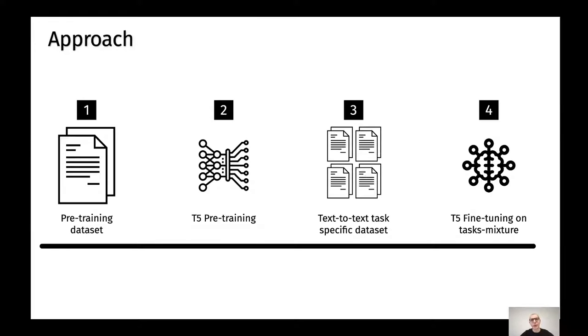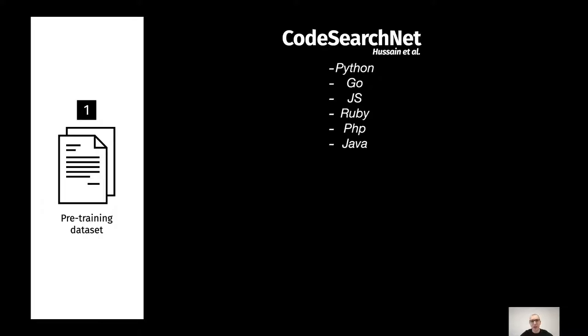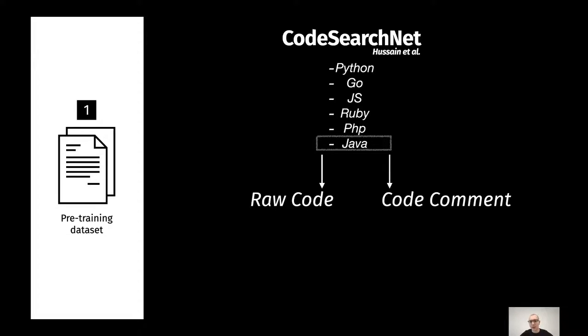To answer the following research question, we devised a four-step approach. In the first step, we mainly focus on the creation of the pre-training dataset. Starting from CodeSearchNet, this huge dataset released by Husain and colleagues, CodeSearchNet includes different languages — Python, Go, and so on — but we only focus on Java. Specifically, from the Java subsection, we extract all the Java methods, namely raw code, and the associated doc string, namely code comments.